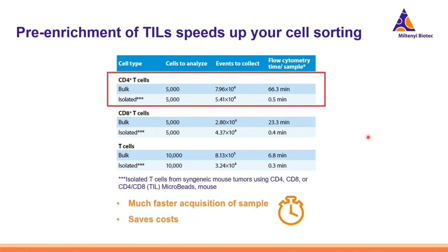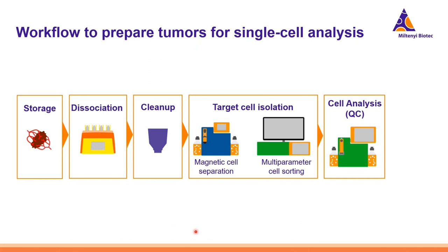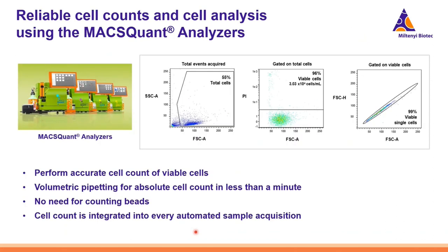The sample will be much more viable and a better fit for single cell analysis. This also allows saving cost because we will only sequence the cells we need. Last but not least, once we have everything ready, it is important to run a quality control before applying single cell analysis. The MACSQuant Analyzers are a very good fit because we can perform accurate cell counts of viable cells using volumetric pipetting, a feature of these flow cytometers that allows absolute cell counts in less than a minute without any counting beads. The cell count is integrated into every automated sample acquisition, so at once we can count cells, detect viability, confirm a single cell suspension, and analyze the phenotype.